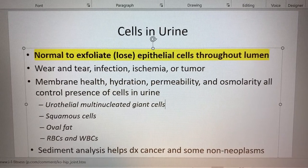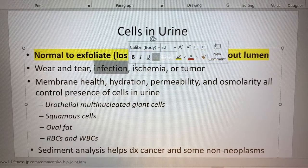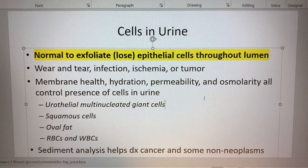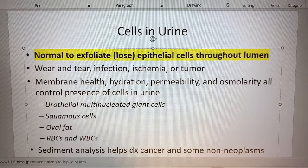However, we could see cells like white blood cells to show us there was an infection, ischemia, or a tumor. So we could see other cells that are pathological. But oftentimes we'll just see epithelial cells and those are normal.